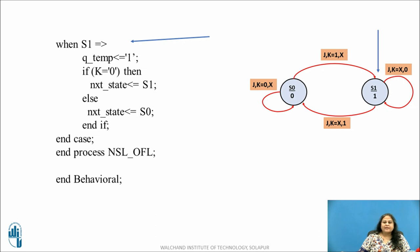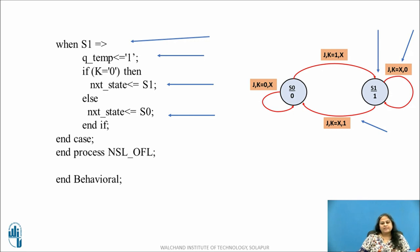Similarly, when present state is S1, the output is logic 1. In state S1, if K equals 0 then the next state is S1, else the next state is S0. After this, the case statement and process statement are ended. Finally, the VHDL code is ended using the end behavioral statement. In this session, we have seen the state table, state diagram and VHDL module for the JK flip-flop using the Moore machine model.